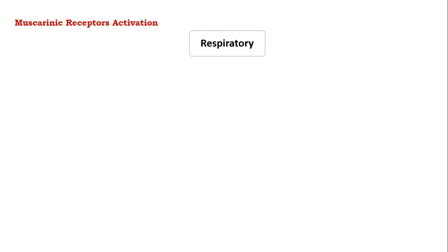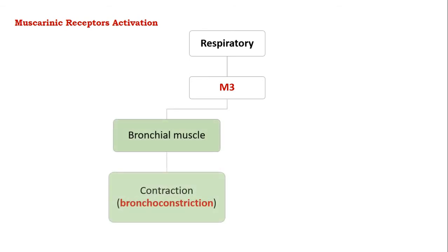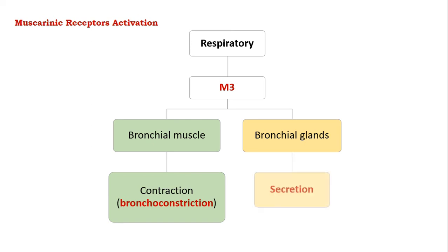On the respiratory system, M3 receptors get activated in the bronchial smooth muscles, leading to contraction of the smooth muscles, which will result in bronchoconstriction. In the bronchial glands, it will increase mucus secretion.